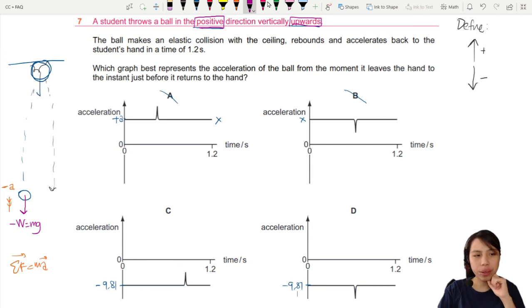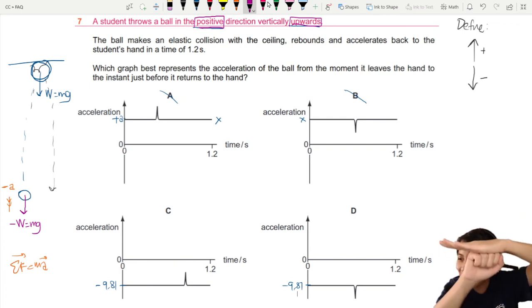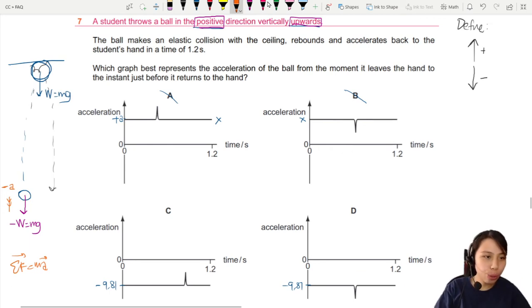What are the forces acting on the ball? Ask yourself. Number one, weight. Always there. Number two, when you are in contact with the ceiling, you have a contact force. So you need to also add another force. Let's try to draw it thicker a bit. This one is your normal contact force.